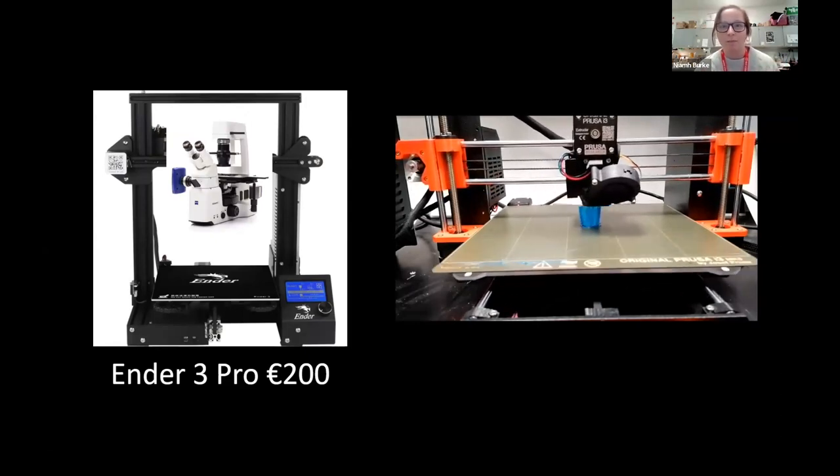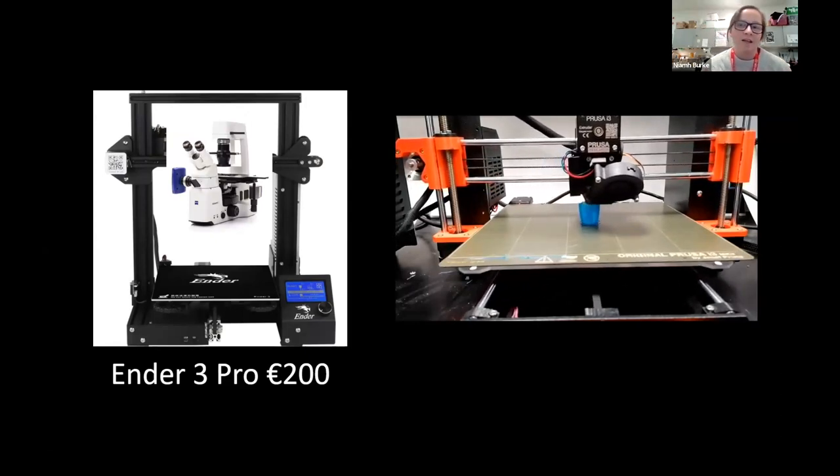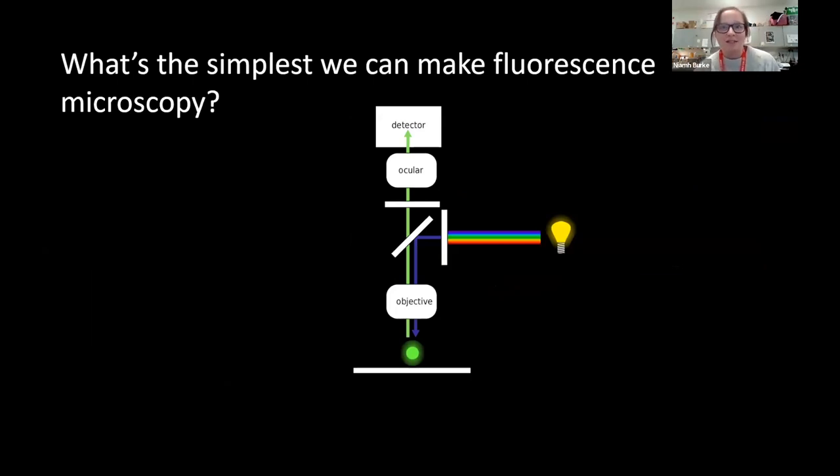What is the simplest that we can make fluorescence microscopy? So fluorescence, here's a schematic of what fluorescence is, and it looks really complicated but it's actually really simple. Fluorescence is where you shine light of a certain color onto the sample and you measure a different color coming back off the sample. Really, if you want to do fluorescence microscopy, you only need four things.